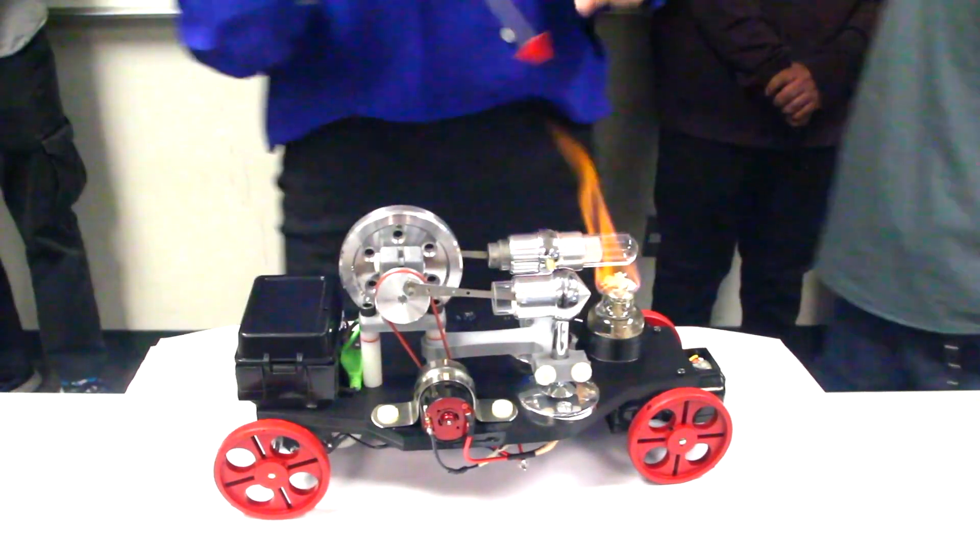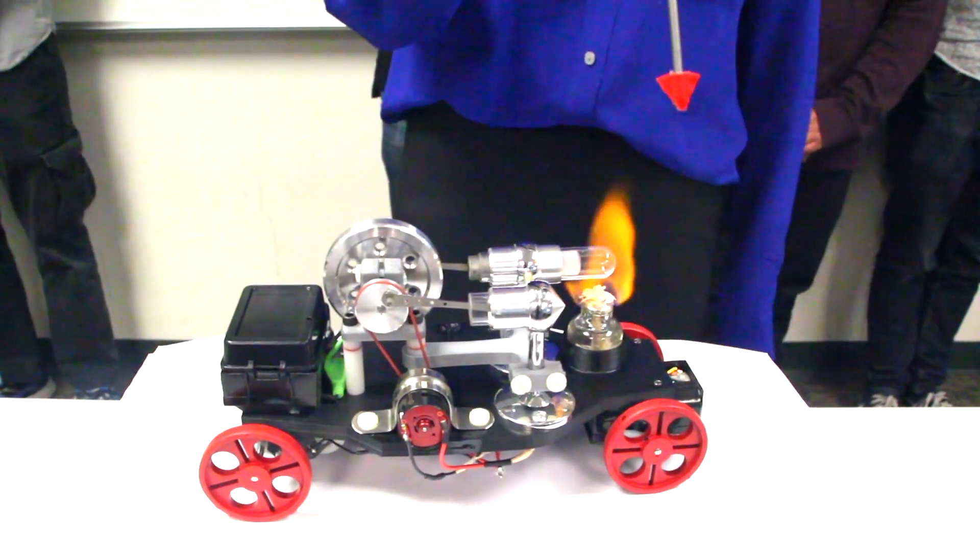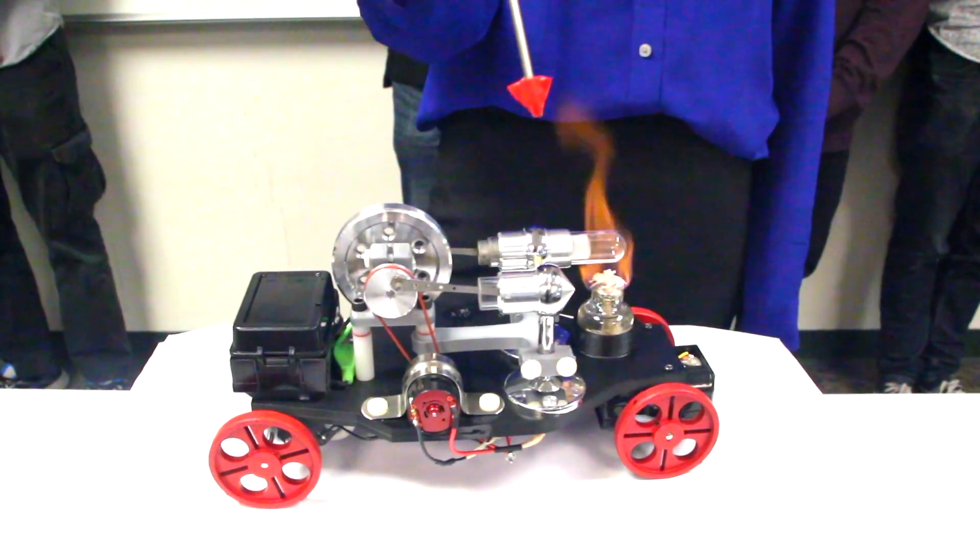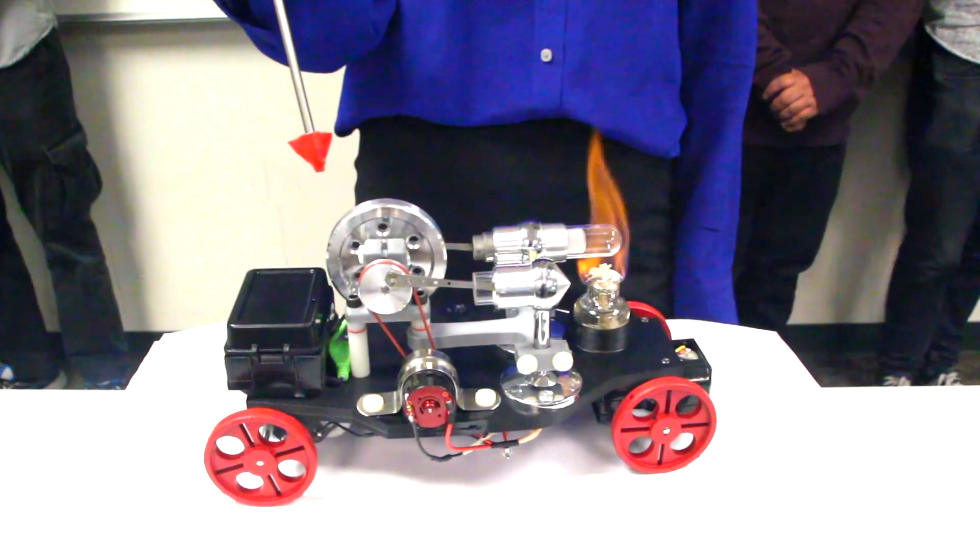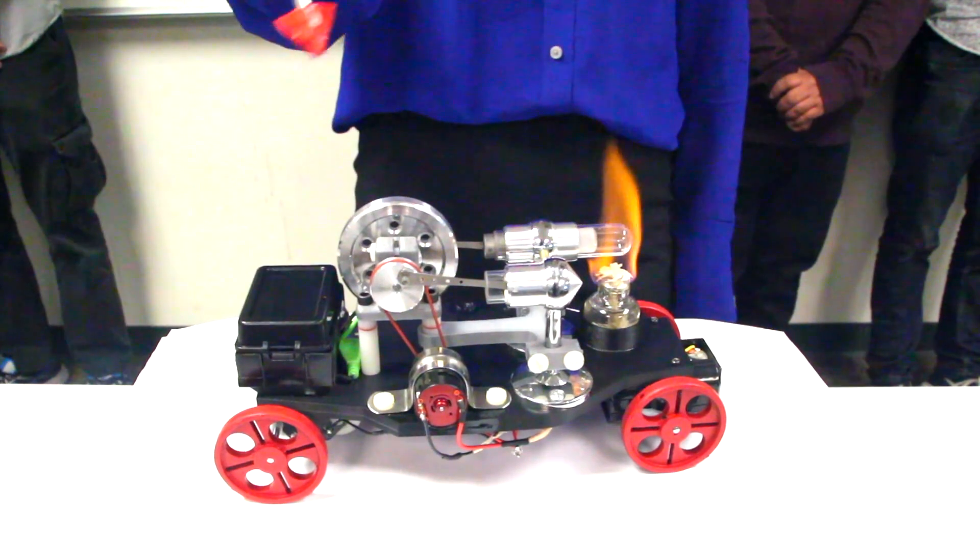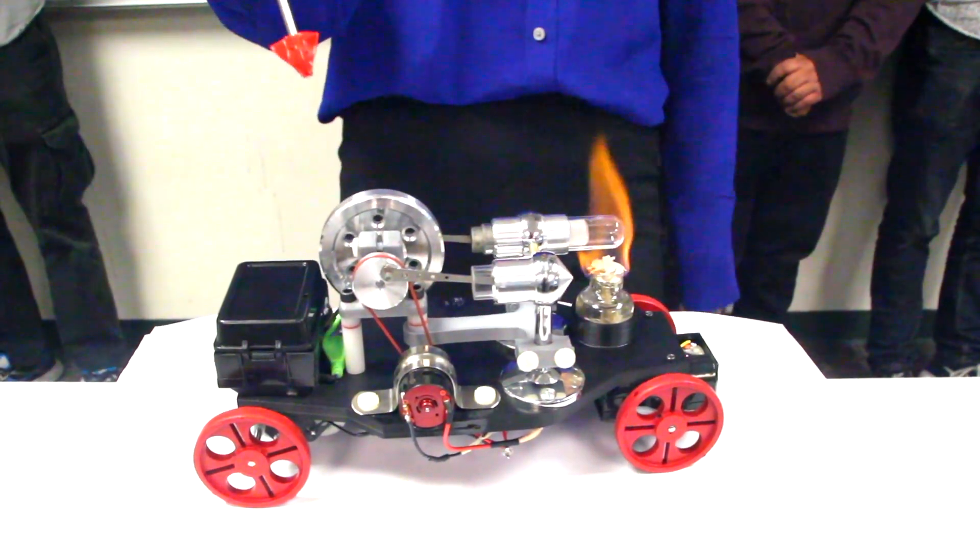I will be talking about the Stirling engine's power transformation process. We start off with thermal energy, which heats the hot air chamber and expands the air, which displaces the piston, causing the flywheel to rotate, creating mechanical energy. The flywheel then moves the pulley and turns the generator, which produces electrical output and powers our drive motor.